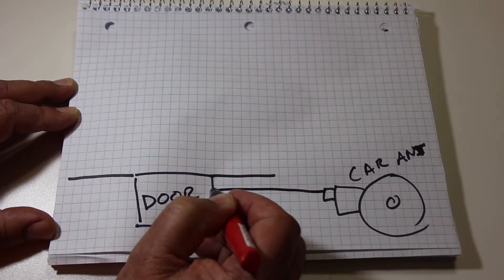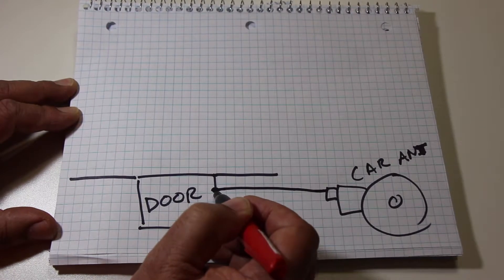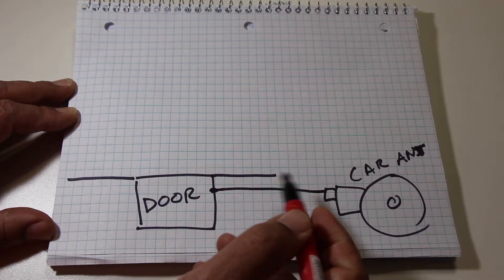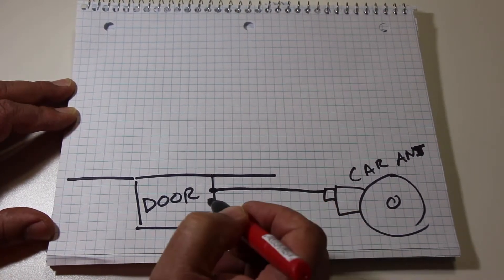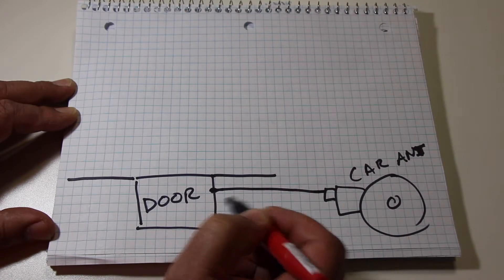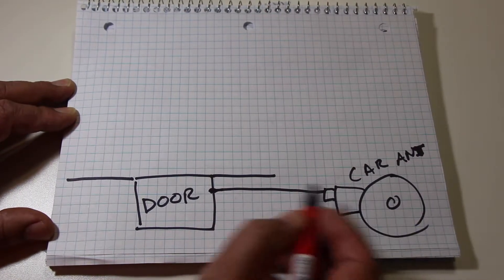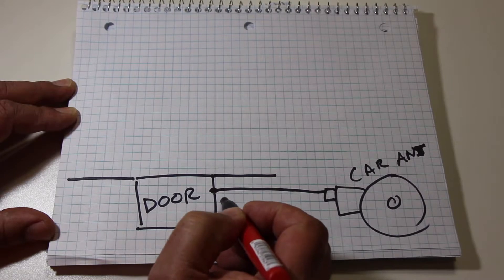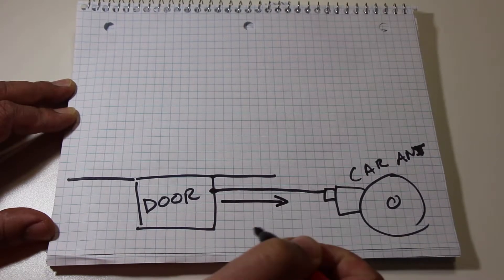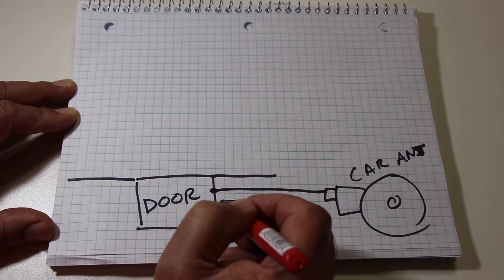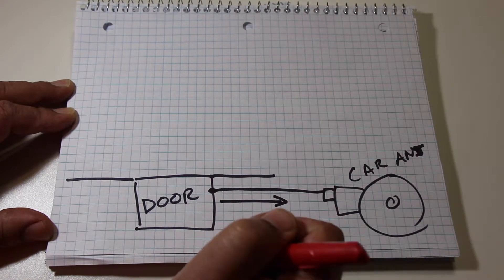When it gets a signal and if it was fully retracted, it extends out. Because the door will be connected to the antenna, it's going to push it open and stay open throughout the day. In the evening when we send another signal, it knows it was fully extended so it will retract back, pulling the door closed.